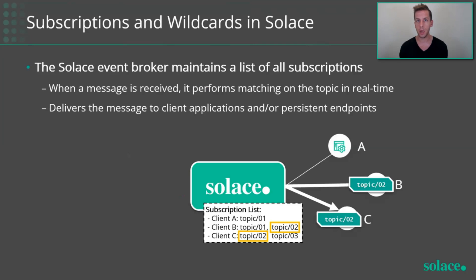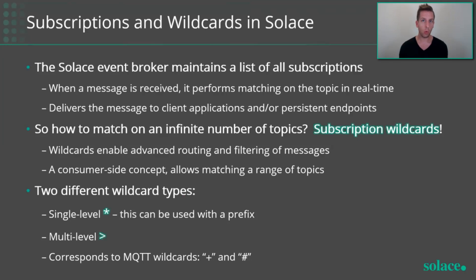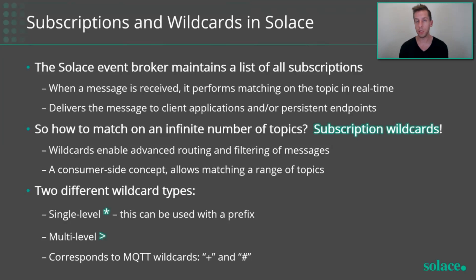Since topics are so unique and dynamic in Solace, how do we manage that from a subscription perspective? The answer is with wildcards. With a single wildcard, you can match any number of published topics. Solace supports two different wildcards: the multi-level wildcard — the greater-than sign — which can match one or more levels and is used at the end of a subscription; and the star, the single-level wildcard, which matches anything up to the next slash. The star in Solace can also be used as a prefix wildcard, allowing you to specify the first few characters at that level.